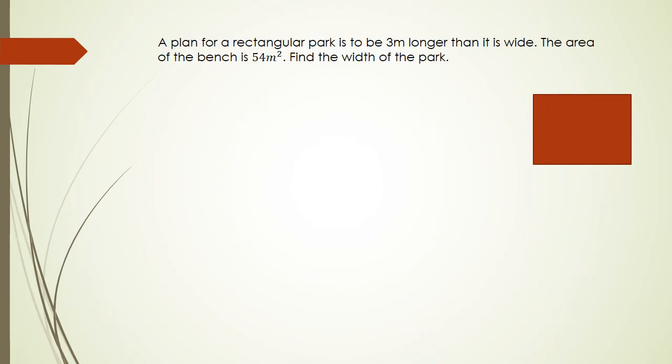A plan for a rectangular park is to be 3m longer than it is wide. The area of the park is 54m². Find the width of the park. Now I apologize because in the original question the variables would actually be given to you. You actually had x+3 there and x here. It tells you that the area is 54 meters squared.